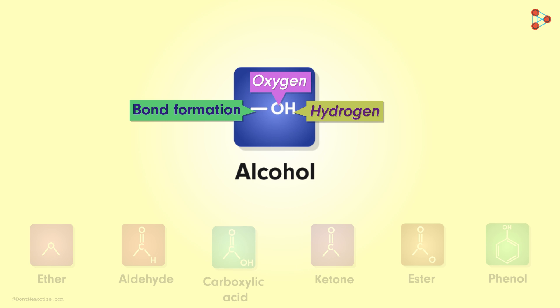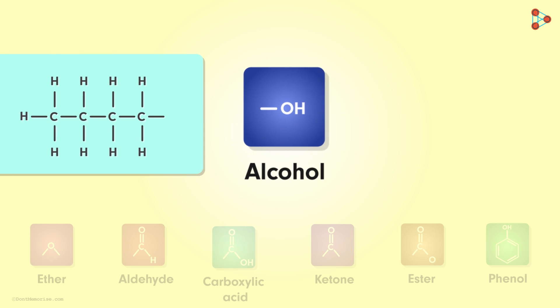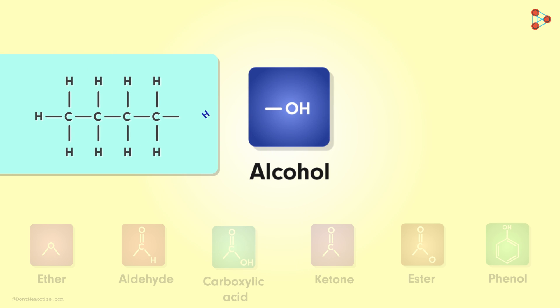So there can be any other atom bonded to the oxygen atom of this hydroxyl unit. If I take any carbon chain, then we can attach the alcoholic functional group at the carbon atom which is available for bond formation, and the new compound gets formed in this way.